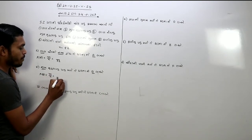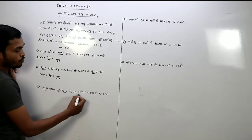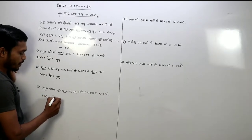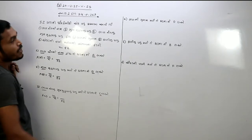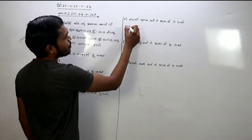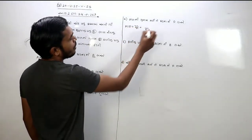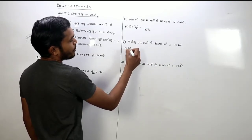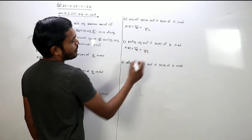તેયાર બાદ લાલ રંગનું મુખ મુદ્રા વળું પત્તુ મળે તે ઘટ્ણને આપણે C લીધું